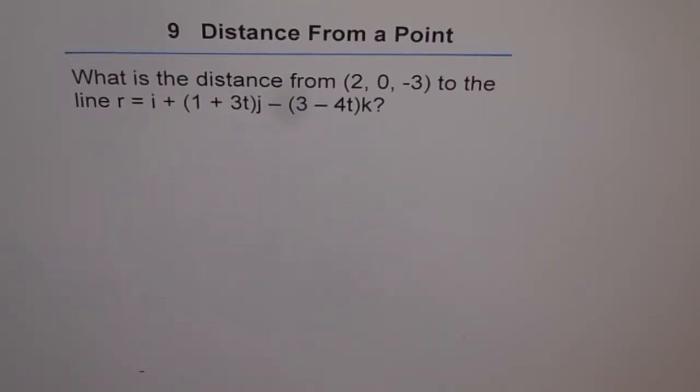Chapter 9. Distance from a point. What is the distance from point (2, 0, -3) to the line r = i + (1 + 3t)j - (3 - 4t)k?